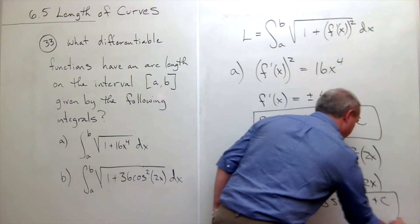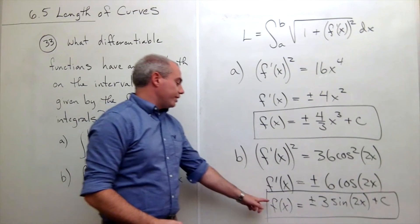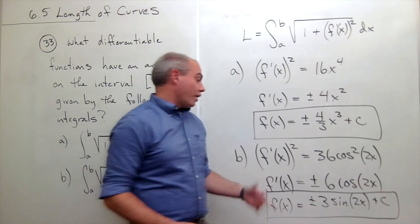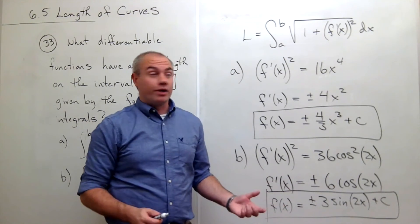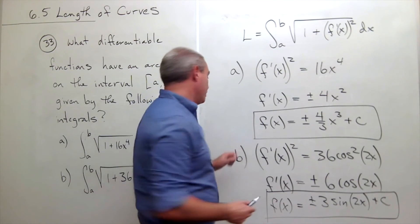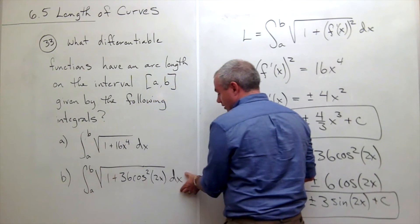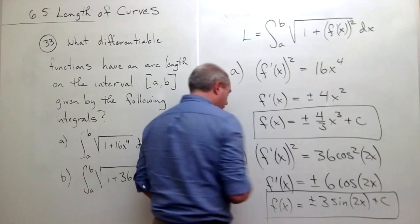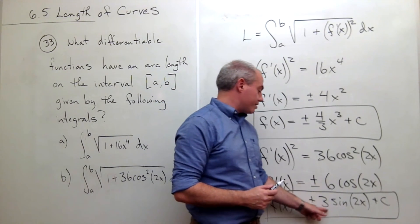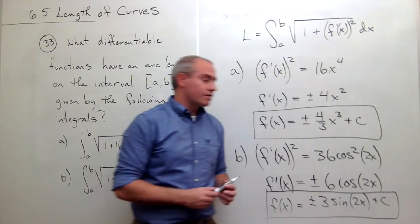So I get this must be equal to plus or minus 3 sine of 2x plus any constant I want. So the original functions or family of functions that would generate this formula for arc length are plus or minus 3 sine of 2x plus c.